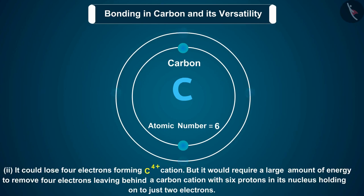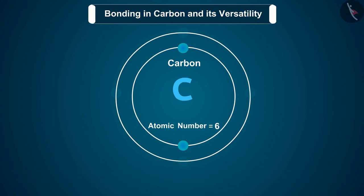Carbon could also lose 4 electrons, forming a C4+ cation. But it would require a large amount of energy to remove 4 electrons, leaving behind a carbon cation with 6 protons in its nucleus holding on to just 2 electrons.